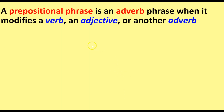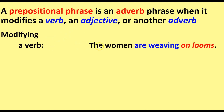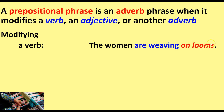Prepositional phrases can also modify verbs, adjectives, and adverbs — in which case the prepositional phrase is acting as an adverb phrase. An example of modifying a verb: 'The women are weaving on looms.' Weaving is our verb (present progressive), and on looms is our prepositional phrase, modifying the verb and telling us how or where they're weaving.